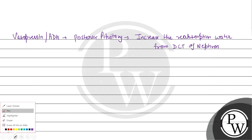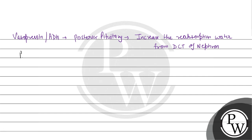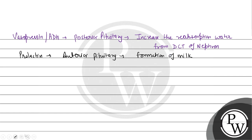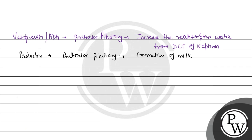If we talk about prolactin hormone, prolactin hormone is secreted from the anterior pituitary gland. It is responsible for the formation of milk — it helps in milk formation, and along with that, it helps in secretion from the mammary gland.